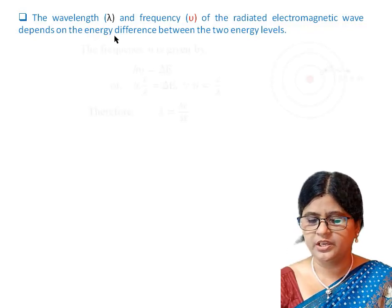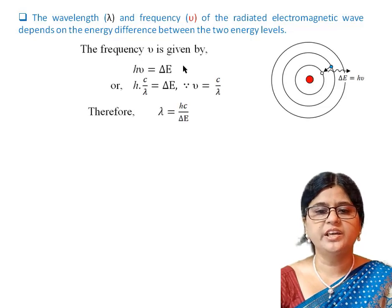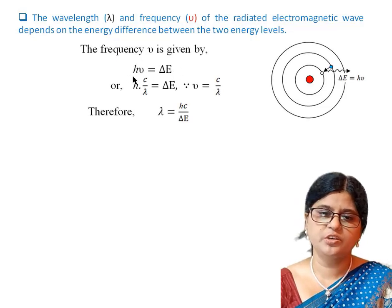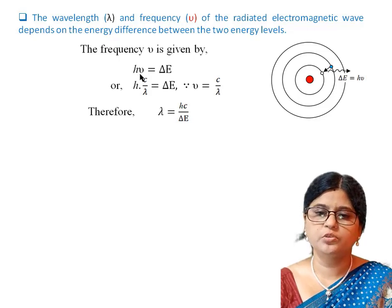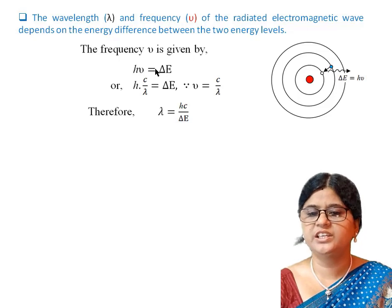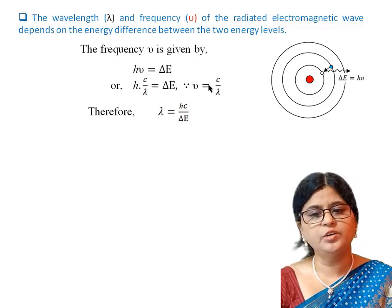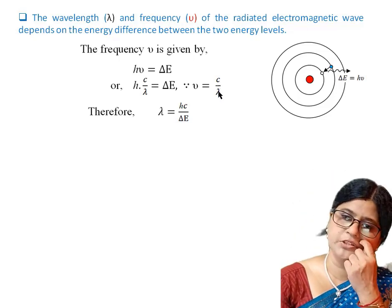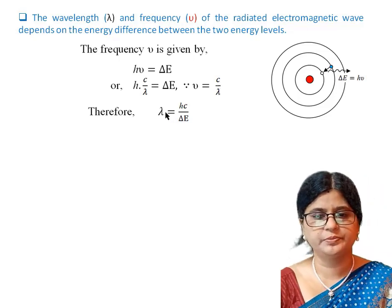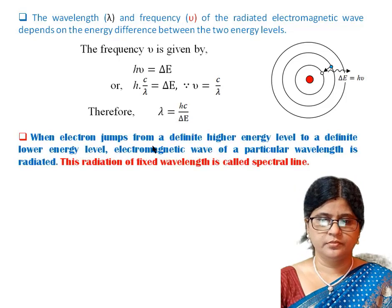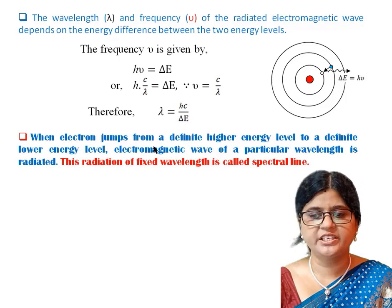We can express this with an equation: E = h·nu, where h is Planck's constant and nu is the frequency. The energy difference is delta E. We also know that nu equals c divided by lambda, where c is the velocity of light and lambda is the wavelength. Therefore, the wavelength lambda equals hc divided by delta E.